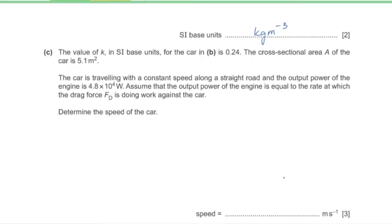Part C: K is 0.24 in SI base units, cross-sectional area A is 5.1 m², the car travels at constant speed, and the engine output power is 4.8 × 10⁴ W. Assume the output power equals the rate at which drag force does work against the car. Find the speed.